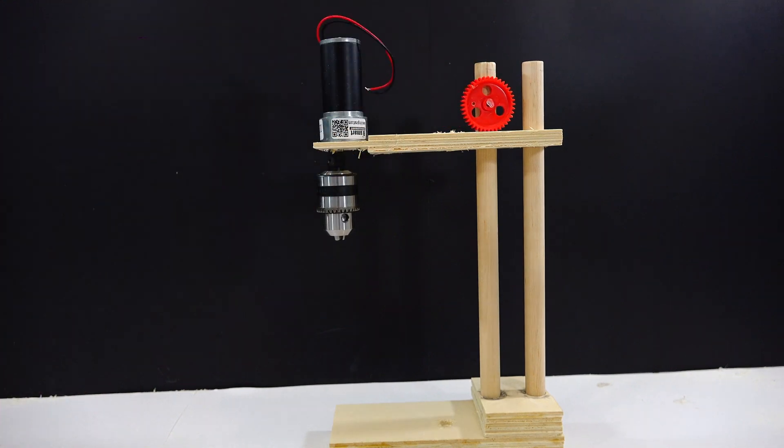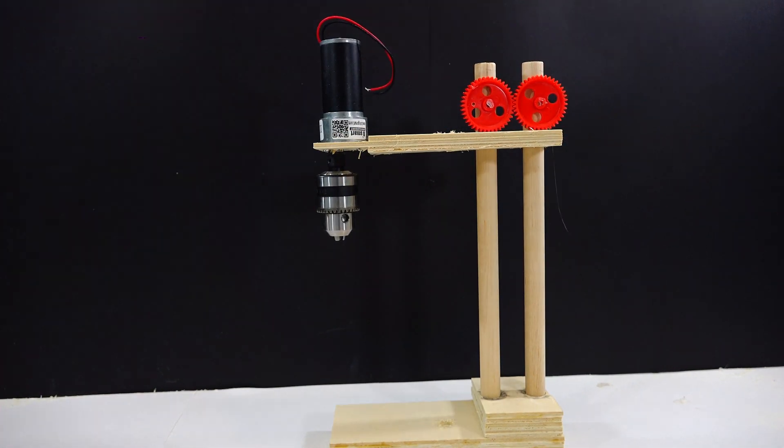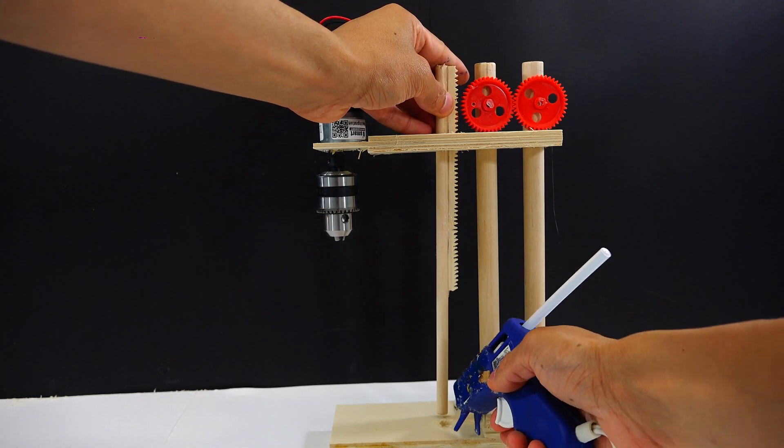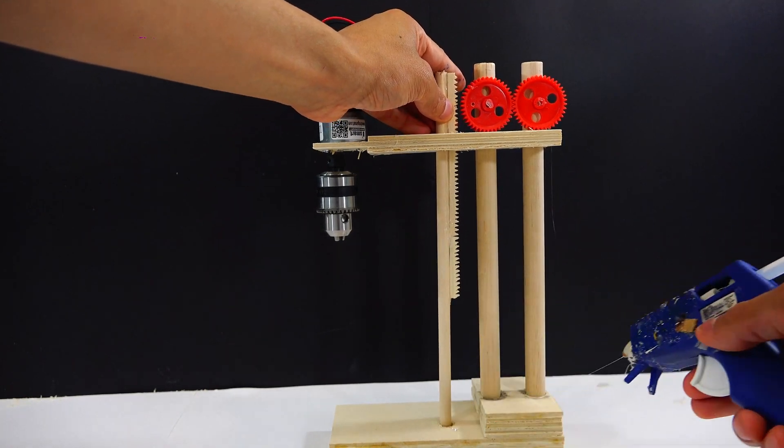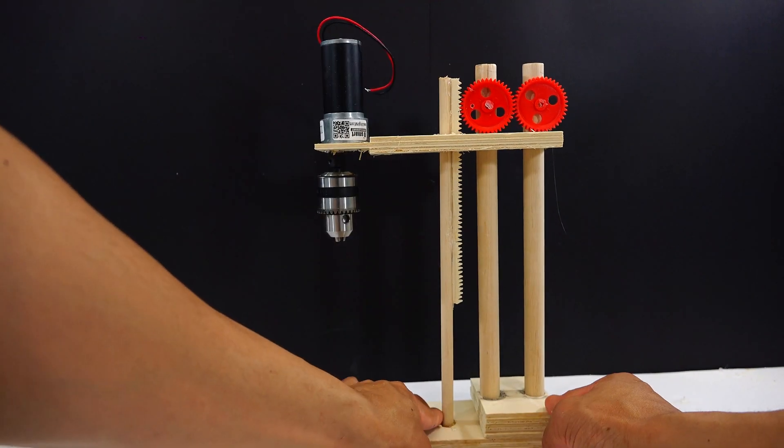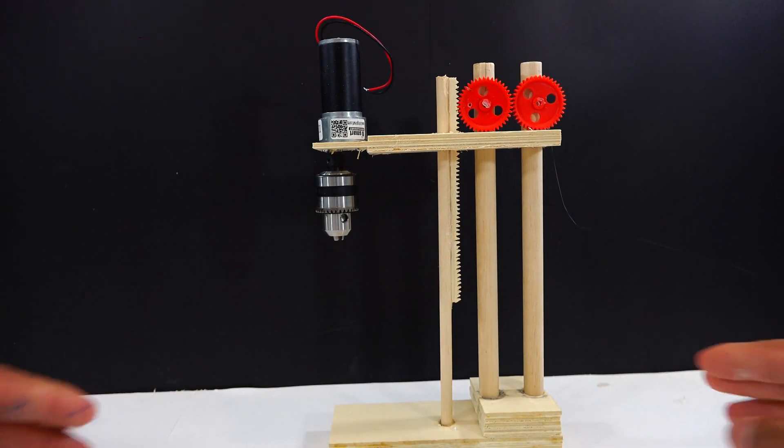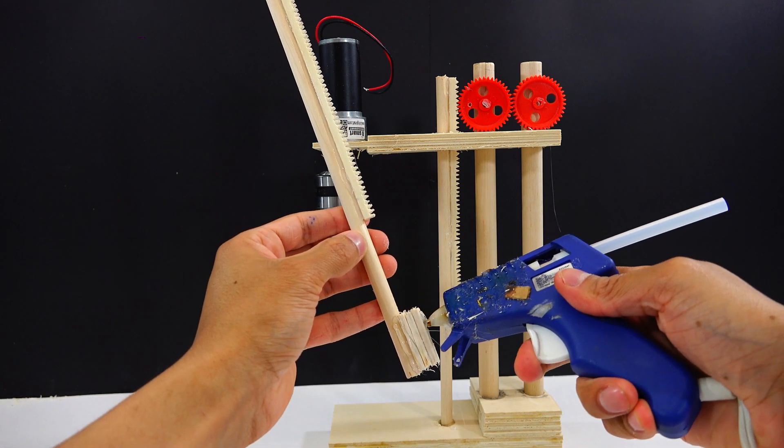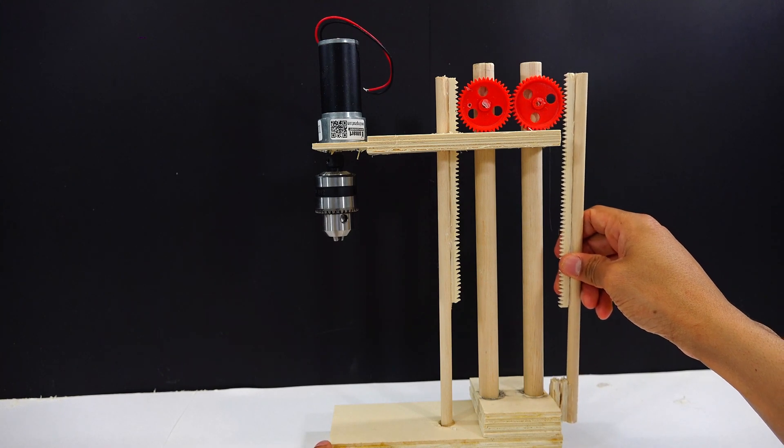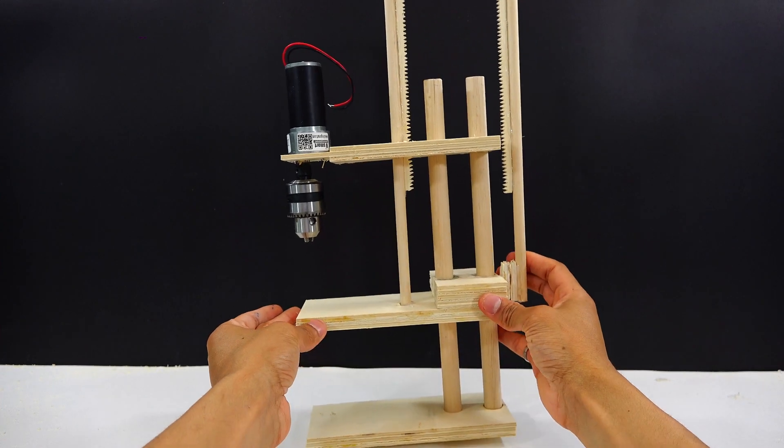And now I'm just going to dry fit everything. I'm going to put the gears on just to see where they would fit. And then I'm going to stick the straight gear in. And make sure that everything's in a position where the straight gears are going to be able to mesh with the normal gears. And then we have the other straight gear that we're going to attach on the other side. And this is basically going to be to move the drilling surface up and down.